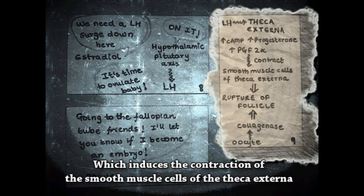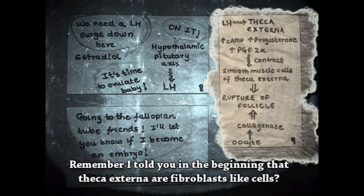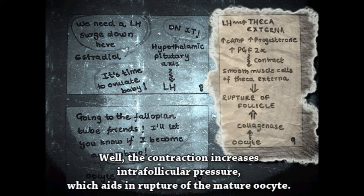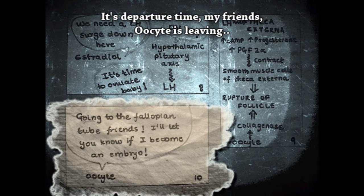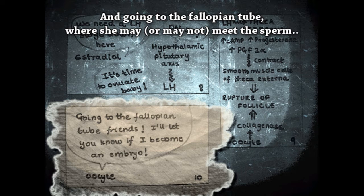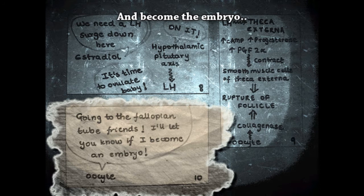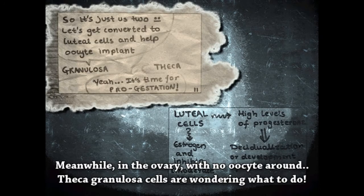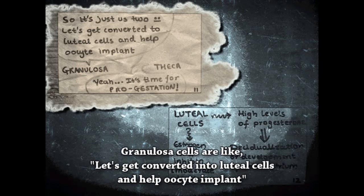Remember, the theca externa cells are fibroblast-like cells. The contraction increases the intrafollicular pressure, which aids the rupture of the mature oocyte — it's departure time. The oocyte is leaving and going to the fallopian tube, where she may or may not meet the sperm and become an embryo. Meanwhile, in the ovary with no oocyte around, the theca and granulosa cells are wondering what to do.